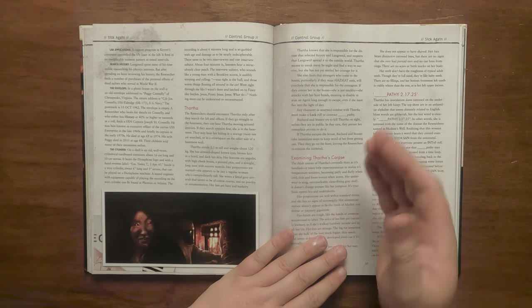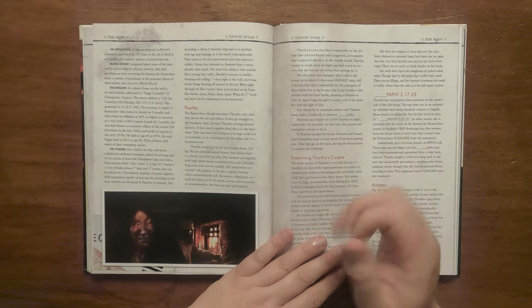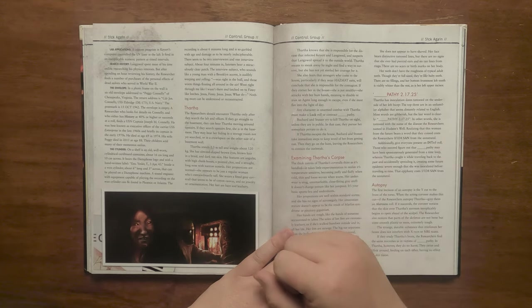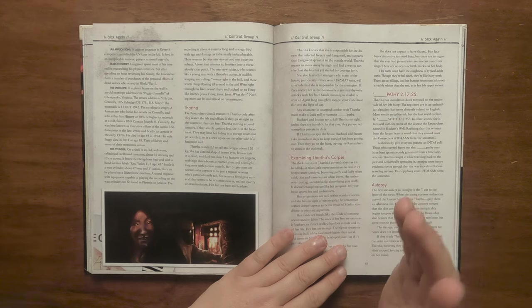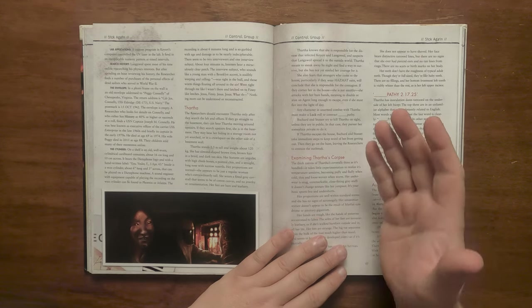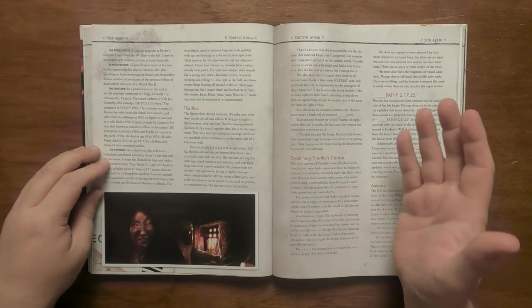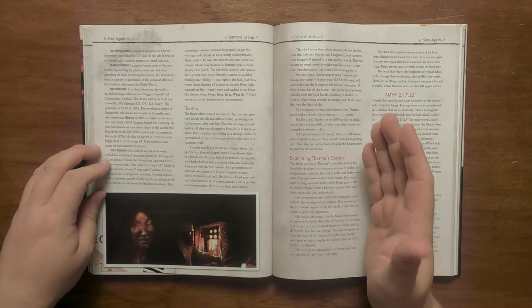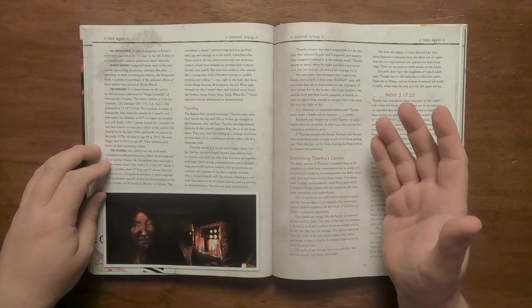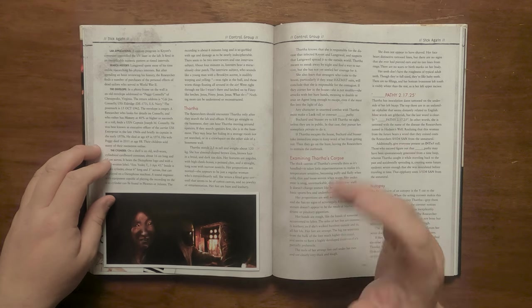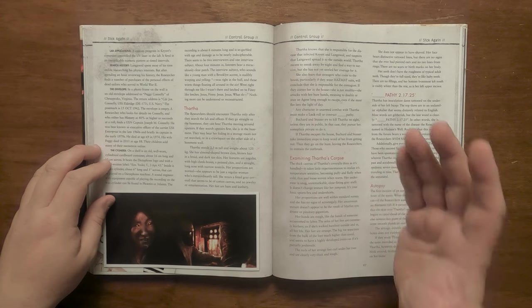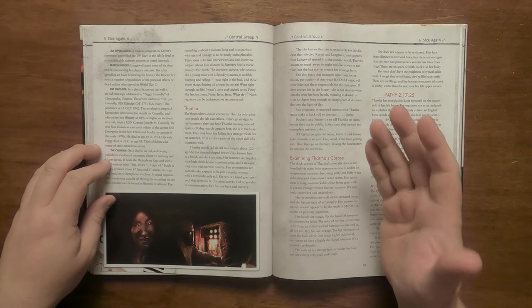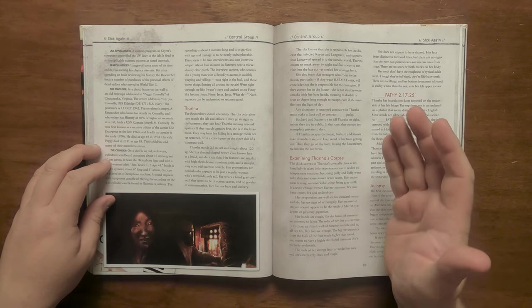A deep dive of research can determine that there was a Captain Joseph M Connolly, an executive officer on the USS Enterprise in the late 1960s, who died in 1974. His wife Peggy died in 2011 and their children sold off their mementos. On a shelf in the room is a cylindrical cardboard container that has a dictograph logo on it. It contains a wax cylinder. If someone can get a sound engineer with the right equipment to play it, it's around six minutes long and seems to have two interviews and one interviewee. It's a man with a heavy Brooklyn accent who is weeping and shouting about worm things floating in the air, passing through him and latching onto someone called Finny like a leech. Next it details the time traveller, Thartha.